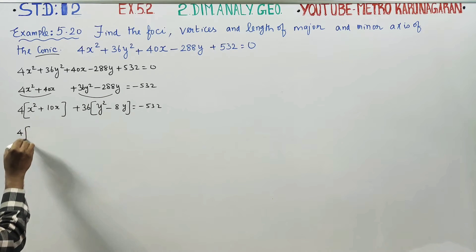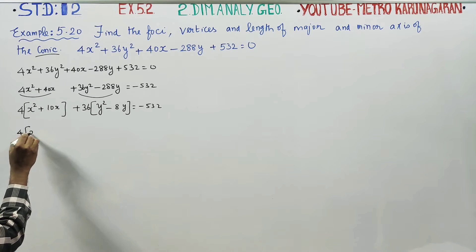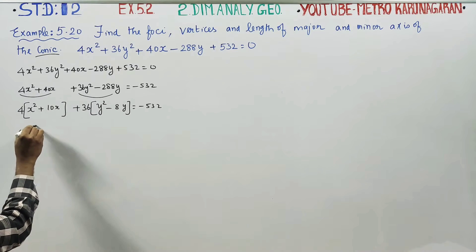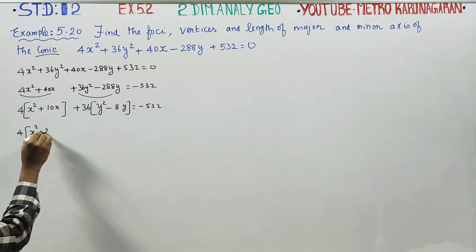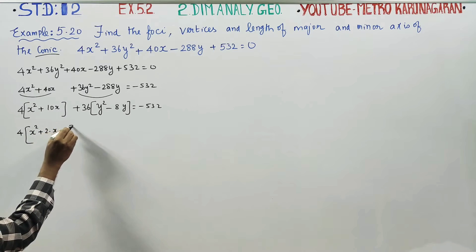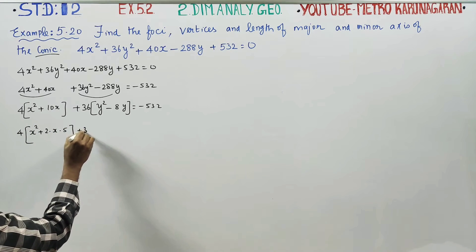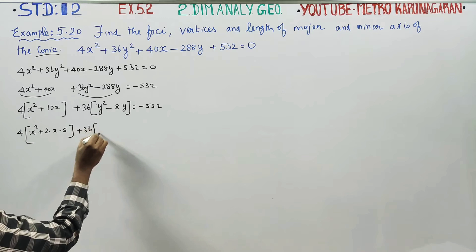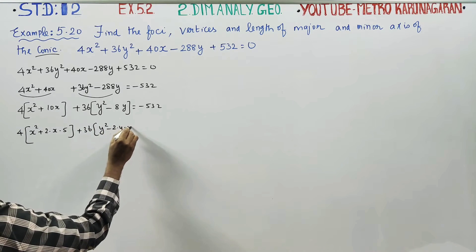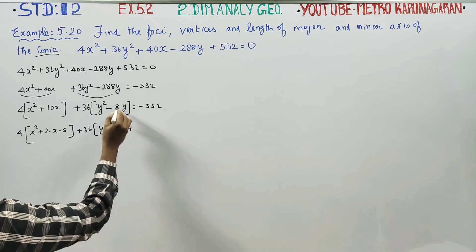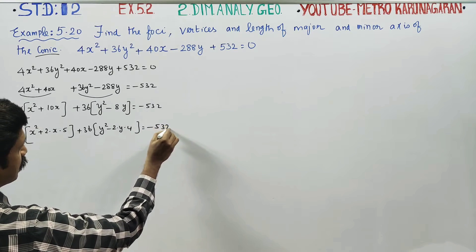Using the completing the square method, we break the expression using the 2ab form: a² + 2ab + b². We apply this to both the x-group and the y-group. For the y-terms: 2 × y × 4, giving us the b value of 4.